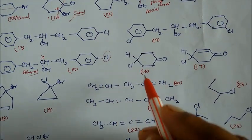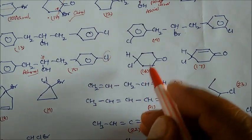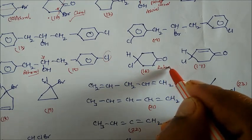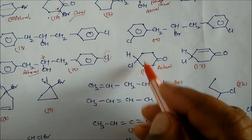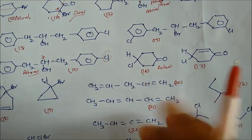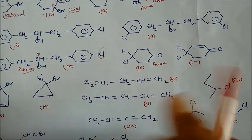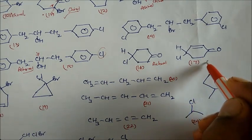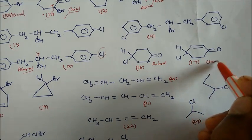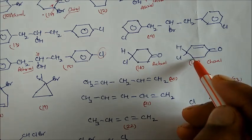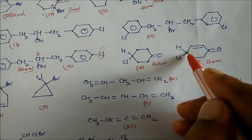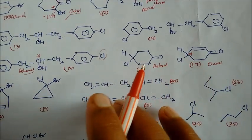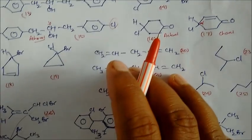Compound 16 is achiral because both groups on this side are the same. Compound 17 is a chiral compound — why? Because here there is a double bond on one side and a single bond on the other, so this is your chiral carbon. This is star-marked, so this is also optically active and chiral.